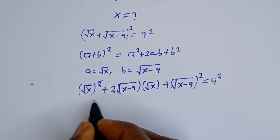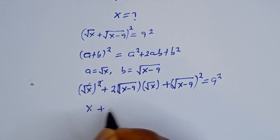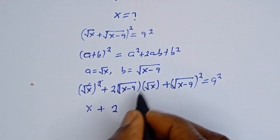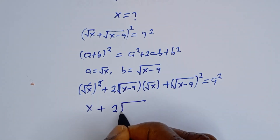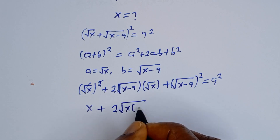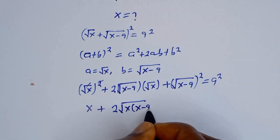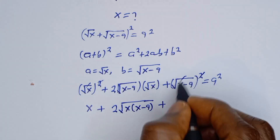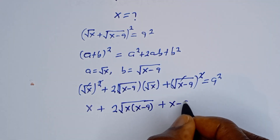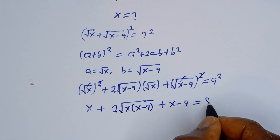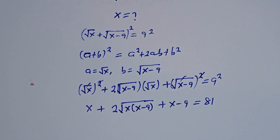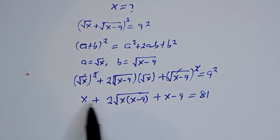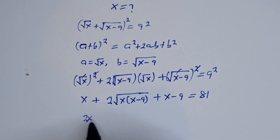We cancel the squared terms. We have s plus 2 times square root of s times s minus 9, plus s minus 9, is equal to 81. Combining the s terms: s plus s gives 2s, so this becomes 2s plus 2 times square root of s squared minus 9s.